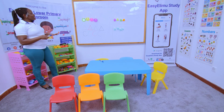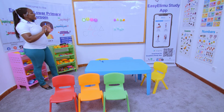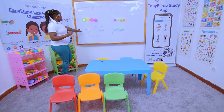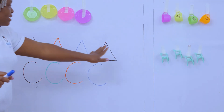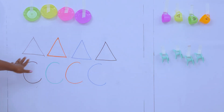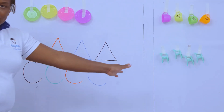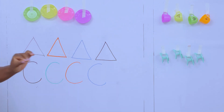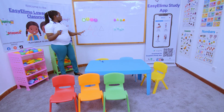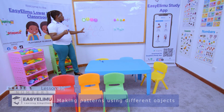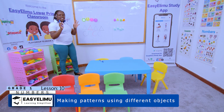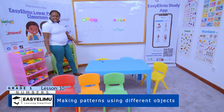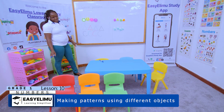Same pattern means there is nothing different between the two. If I'm using the triangles, it is the triangle. If it's the sound K, it is the sound K. If I'm using the chairs, it is the chairs. I can change the colors, but I cannot change the size and I cannot change the shape. Are we together?